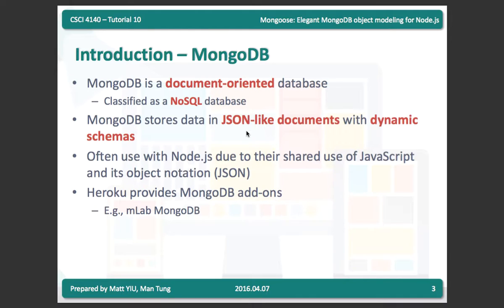MongoDB is classified as a NoSQL database to differentiate it from traditional relational databases like MySQL, PostgreSQL, or Oracle SQL. MongoDB stores all its data in JSON-like documents, and you can use a dynamic schema. The reason MongoDB is often used with Node.js is that MongoDB stores records in JSON format, and Node.js can parse these documents very easily.